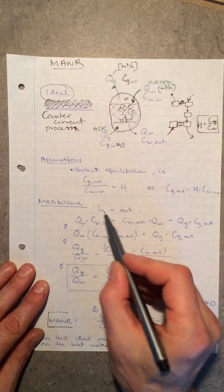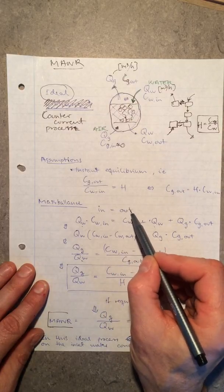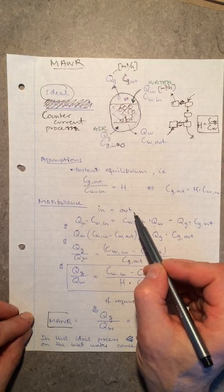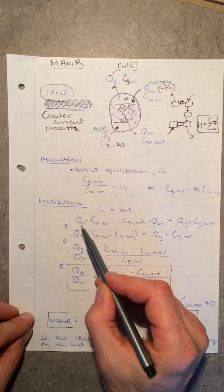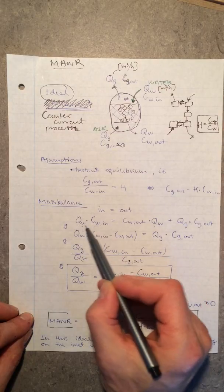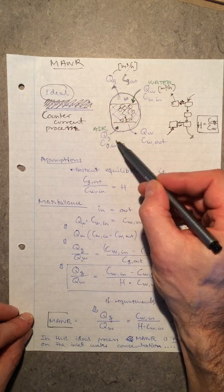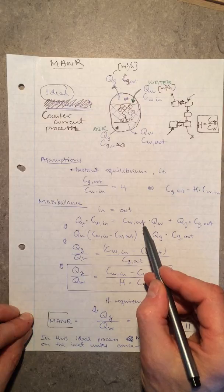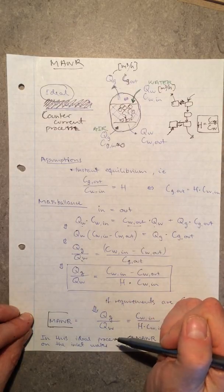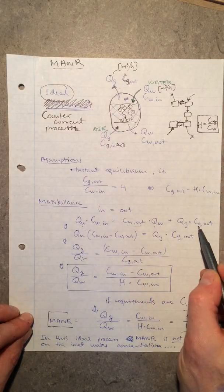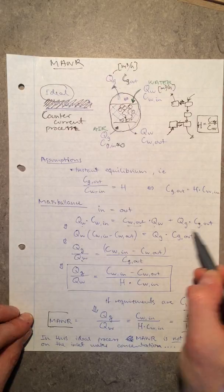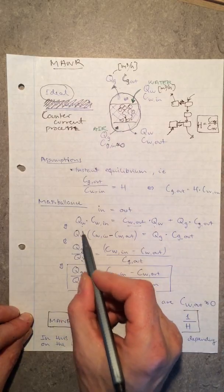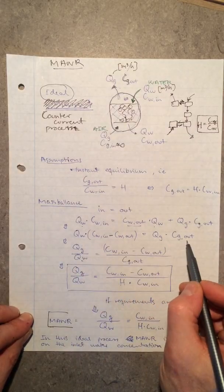If I make a mass balance of substance, I know from this vessel what goes in must come out. For the substance dissolved in air and water, what's going in is going out. Going in is something in the water: I have a concentration in the raw water and a flow of water. The flow of air coming in has no substance, so that term is left out. Going out, I have the flow of water with the remaining concentration, and the flow of gas with its concentration. I can rearrange and put the water flow outside the parenthesis.